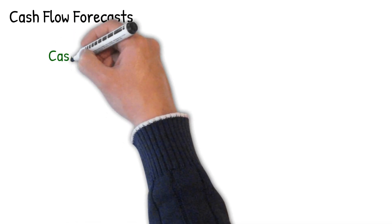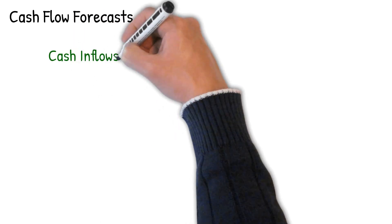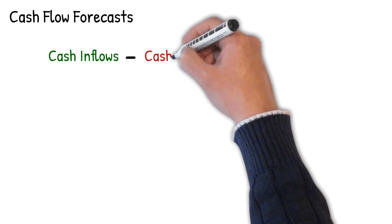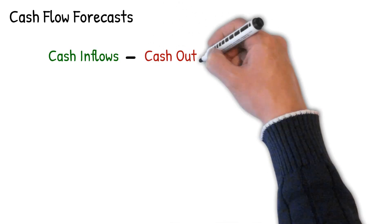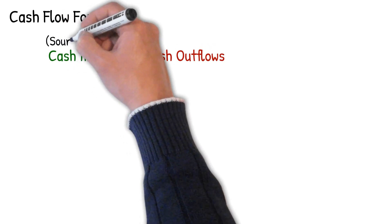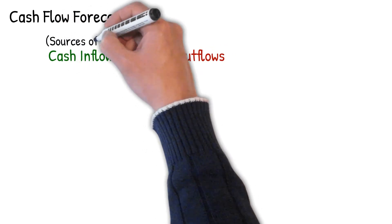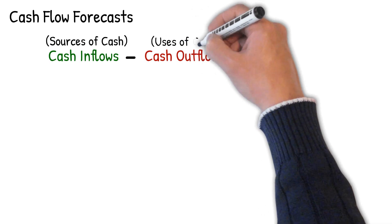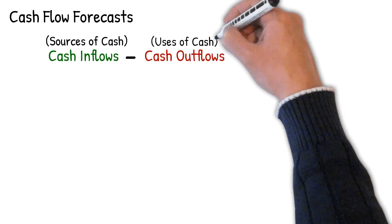Cash flow on a project is calculated by subtracting cash outflows from cash inflows over a particular period, be that weekly, monthly, yearly, or over the course of a project. You can think of cash inflows as sources of cash and cash outflows as uses of cash or expenses.